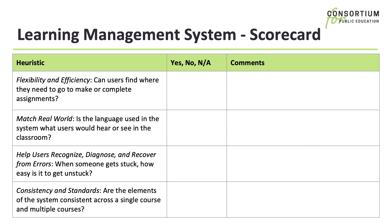As an alternative, here's a scorecard example applied to evaluating a learning management system. While not a complete list, you can see how the heuristic is identified, and there's a space for evaluators to detail any issues that they find.